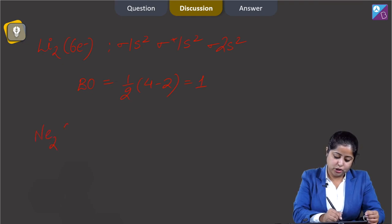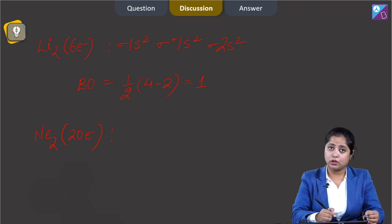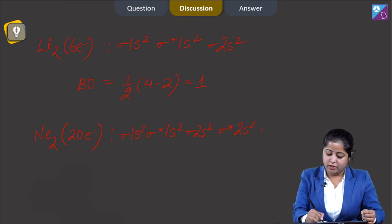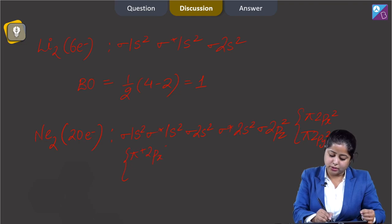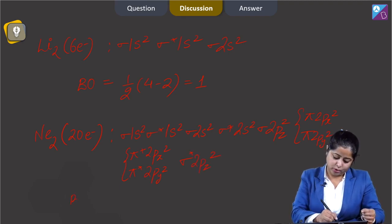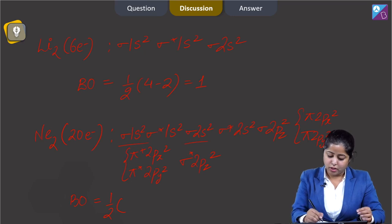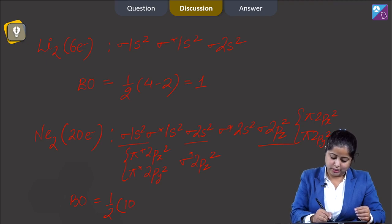Moving to the last option, Ne2, which has 20 electrons. The molecular orbital configuration is: sigma 1s², sigma* 1s², sigma 2s², sigma* 2s², sigma 2pz², pi 2px², pi 2py², pi* 2px², pi* 2py², and sigma* 2pz². The number of electrons in bonding molecular orbitals equals 2+2+4+6+10, and the antibonding count is 10.